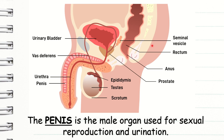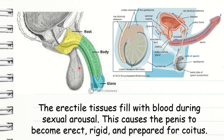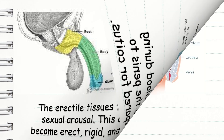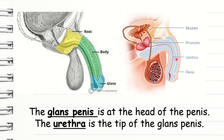The penis is the male organ used for sexual reproduction and urination. It reaches its full size during puberty. Its root is attached to the wall of the abdomen, while its tube-shaped body or shaft is comprised of erectile tissues. The erectile tissues fill with blood during sexual arousal, causing the penis to become erect and rigid, and prepared for coitus. The penis is made up of several parts. The glans penis, which in uncircumcised males is partially covered by the foreskin, is at the head of the penis. The urethra is at the tip of the glans penis. When the penis is erect, urine will not be able to come out of the urethra, as only semen will be ejaculated from the body.